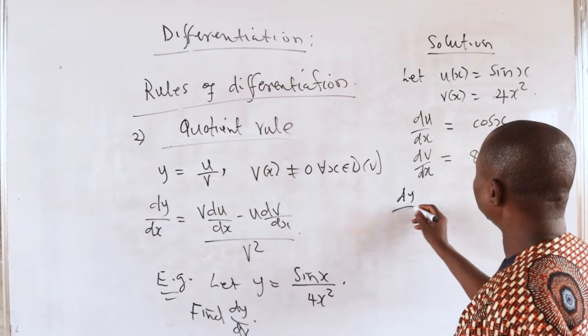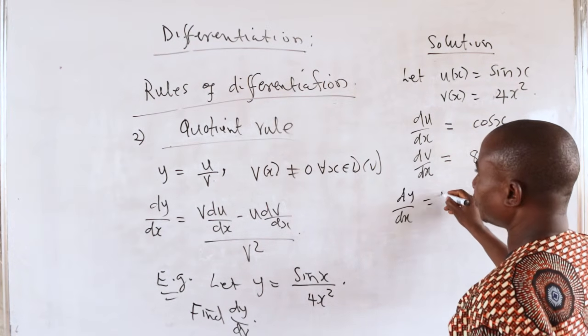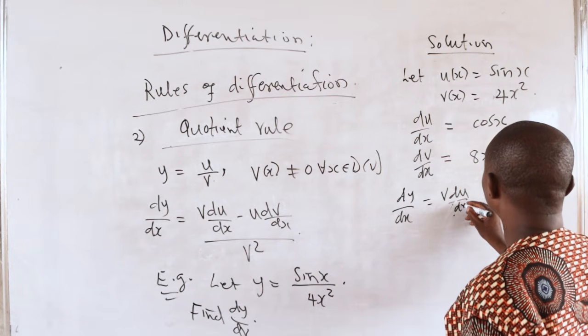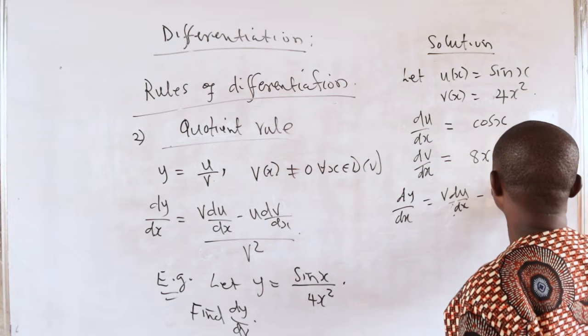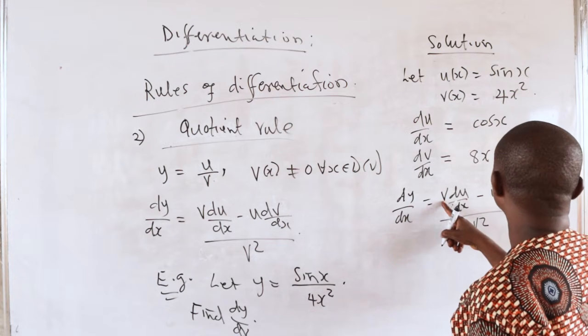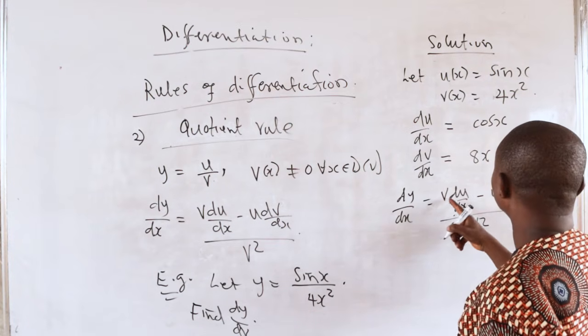dy/dx is v(du/dx) minus u(dv/dx) divided by v². We know u, we know v, we know du,